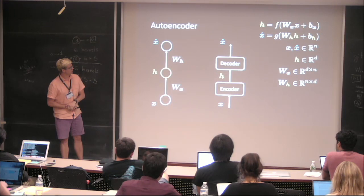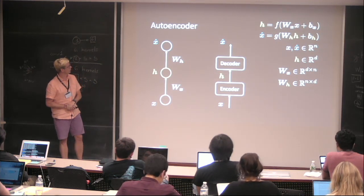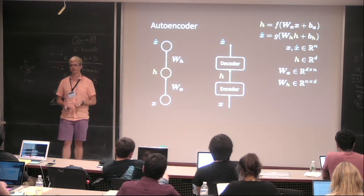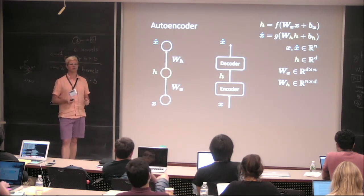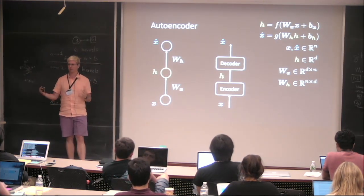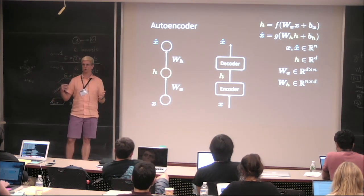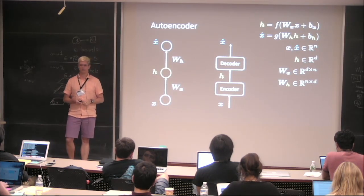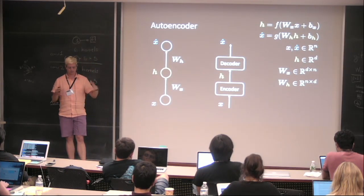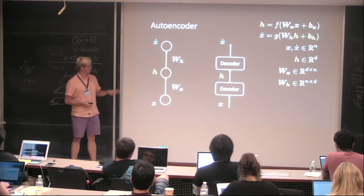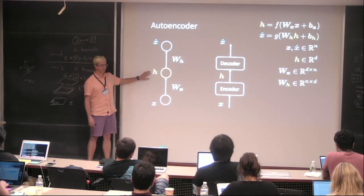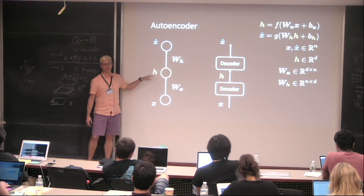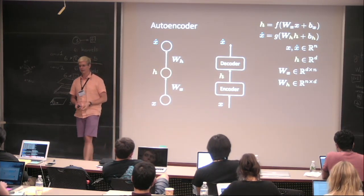Why would we use this? Because labels are expensive — someone has to involve humans to label every single example of, say, objects or images. In this case, we try to learn interesting representations without needing external labels. There's a paper just released from Facebook AI about pre-training with unsupervised techniques, which is very related to this topic.